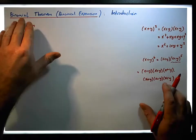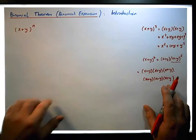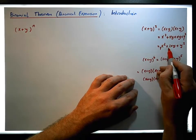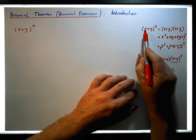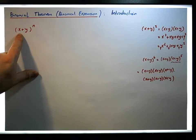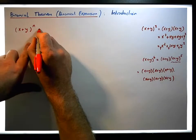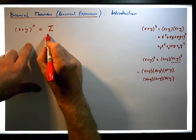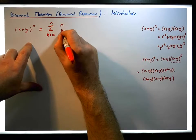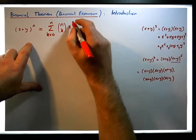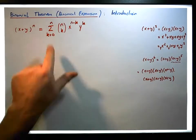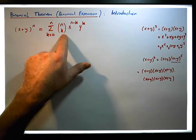What the binomial expansion — the binomial theorem — helps us to do is give us a formula that allows us to calculate the coefficients with respect to the two indeterminants, the x's and the y's, and also the powers of the x's and y's as we go through the expansion. It says that x plus y to the power of n can be calculated as the sum from k equals zero all the way through to n of n-choose-k times x to the power of n minus k times y to the power of k.